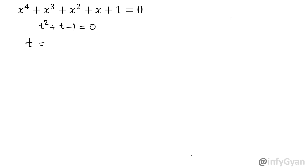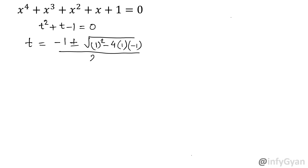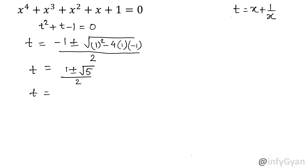t equals minus b, so minus 1 plus or minus the square root of b squared — that means 1 squared minus 4 times 1 times c, which is negative 1 — all over 2a, where a is 1, so over 2. If we simplify, that comes out to be root 5 over 2. Remember, t is our substitution: t is x plus 1 over x. So t will be negative 1 minus root 5 over 2 and negative 1 plus root 5 over 2.